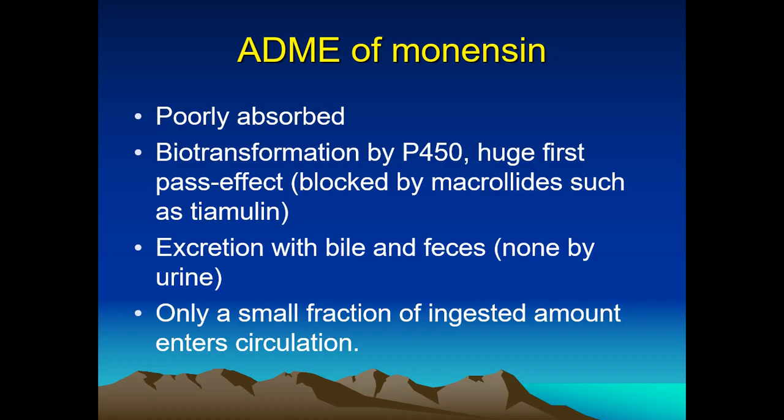The pharmacokinetics of monensin and other ionophores are crucial to understanding their toxicity. Most of the amount ingested is poorly absorbed, and the fraction that reaches the liver is rapidly metabolized by cytochrome P450s — a huge first-pass effect that prevents entry into systemic circulation. The metabolites are excreted into bile and expelled with feces. If ionophores are combined with macrolide antibiotics such as erythromycin or tiamulin, this detoxification mechanism is inhibited and a therapeutic dose of monensin can become toxic.